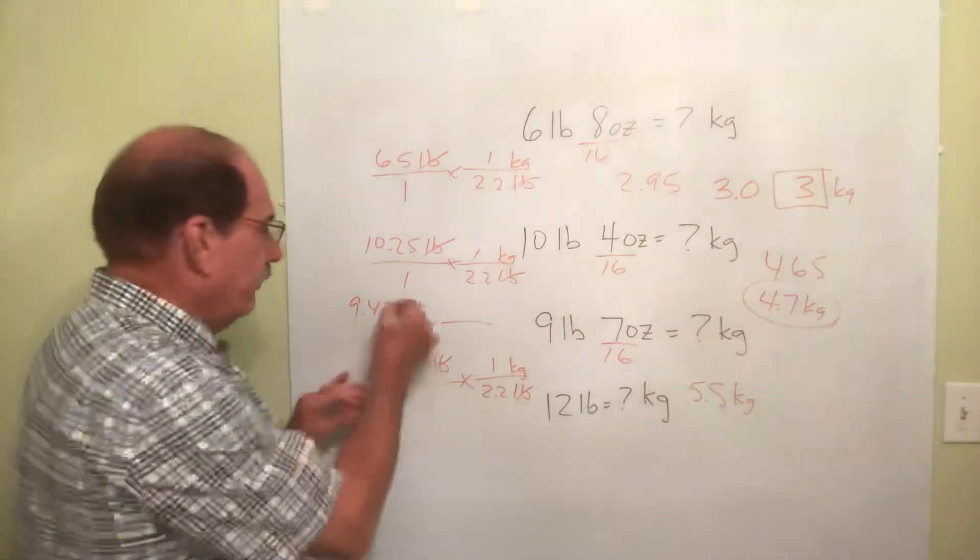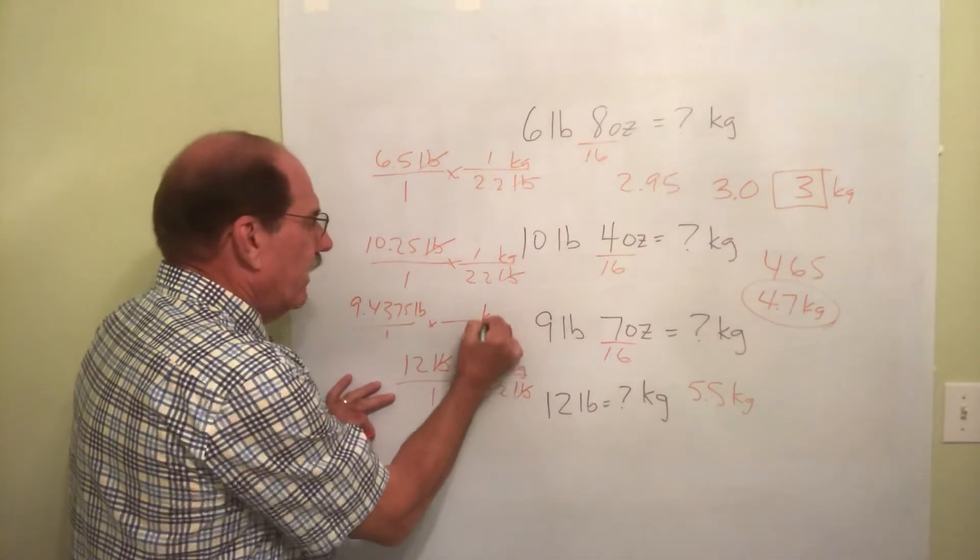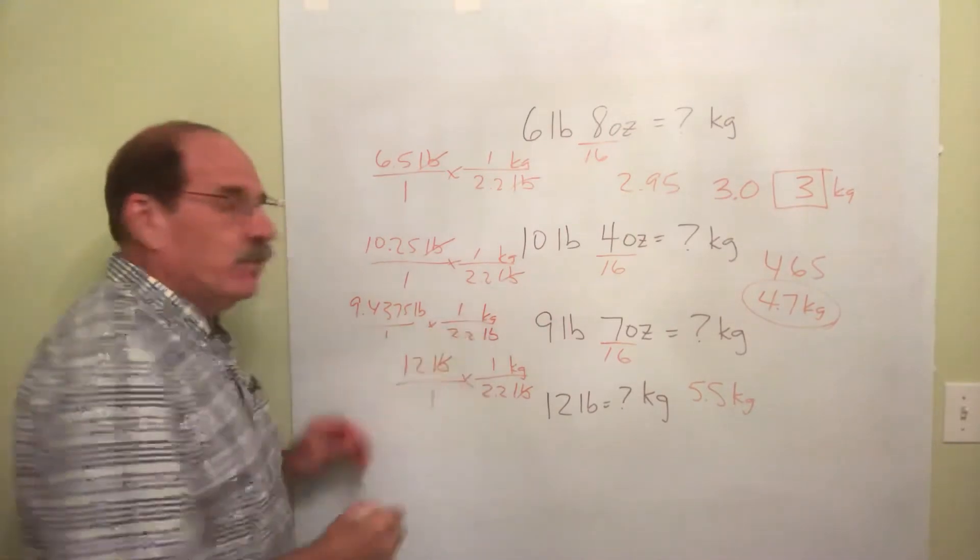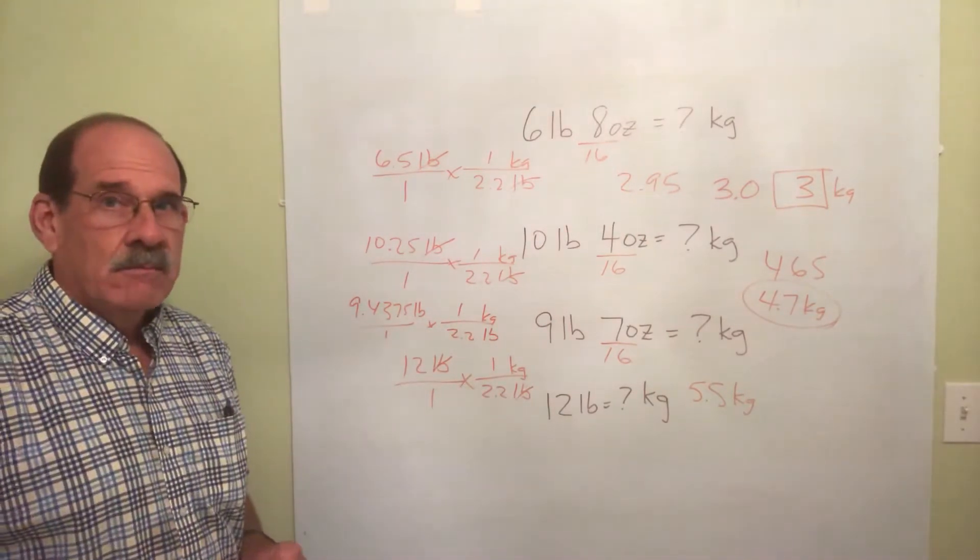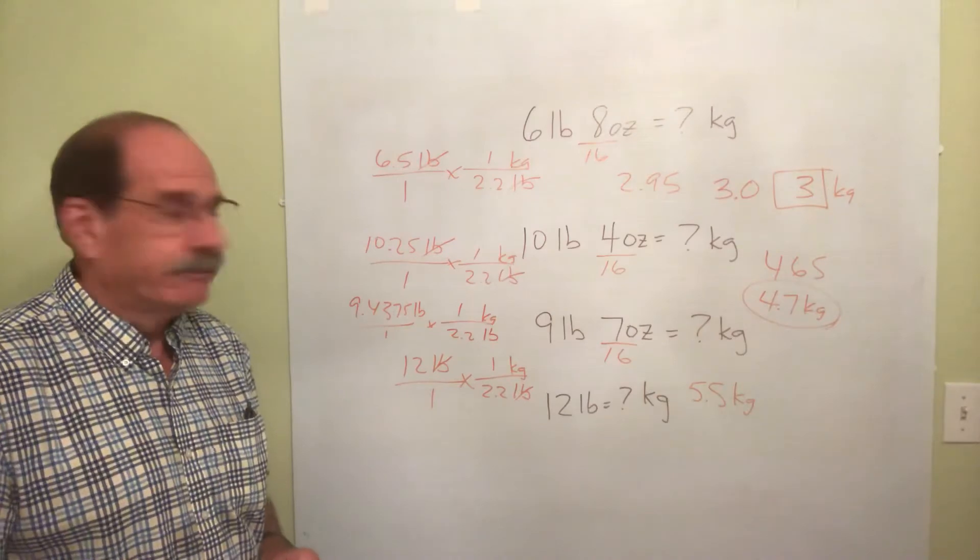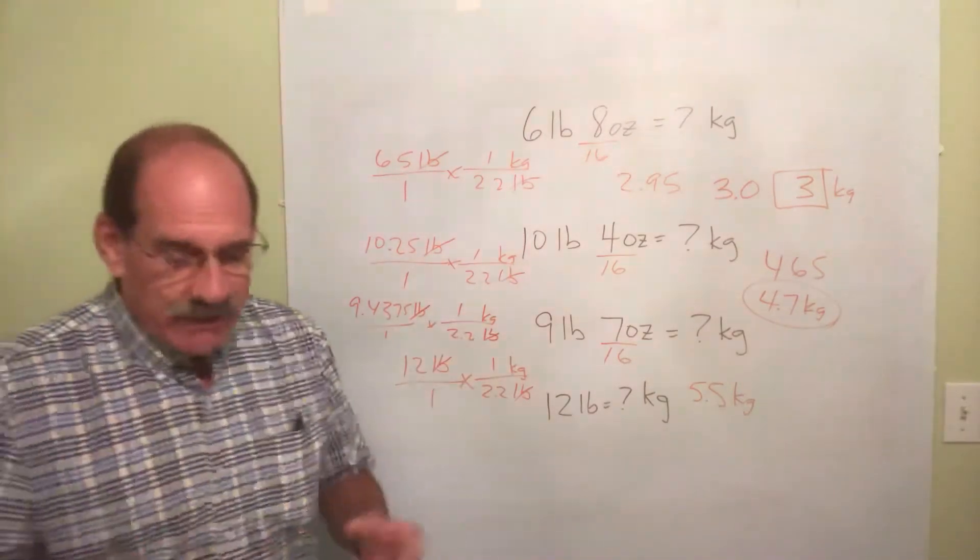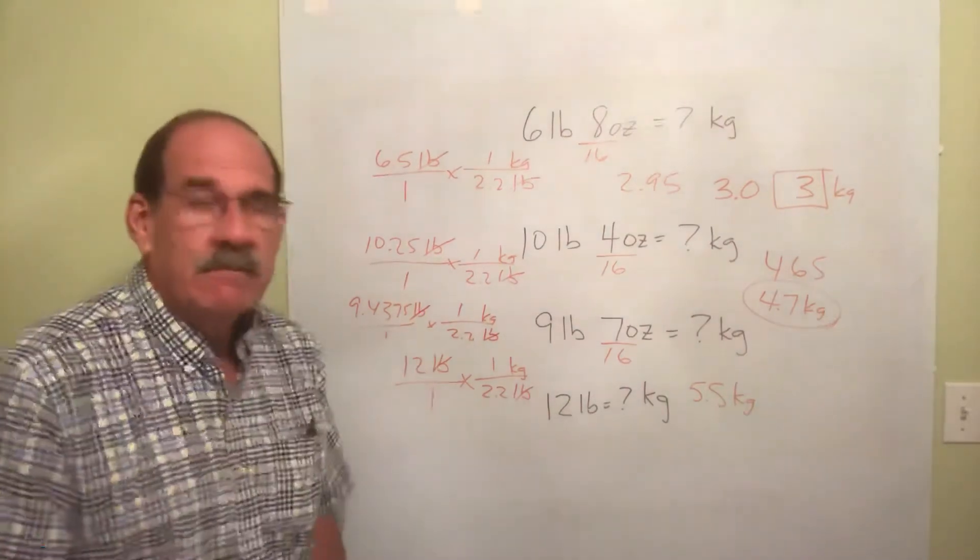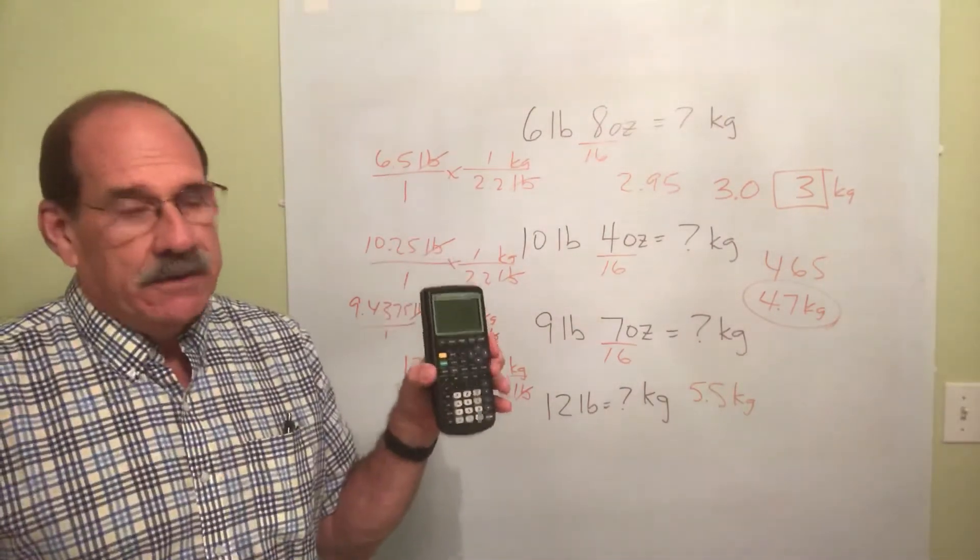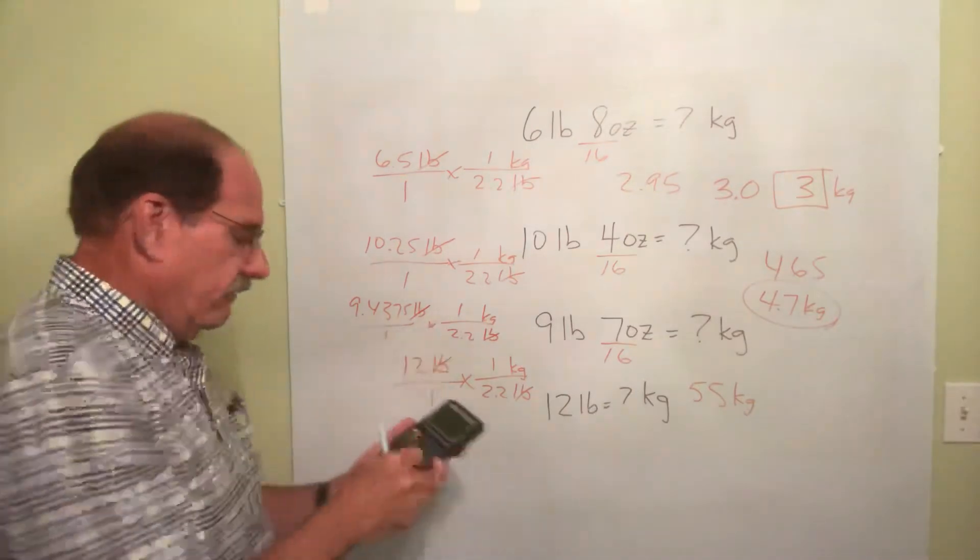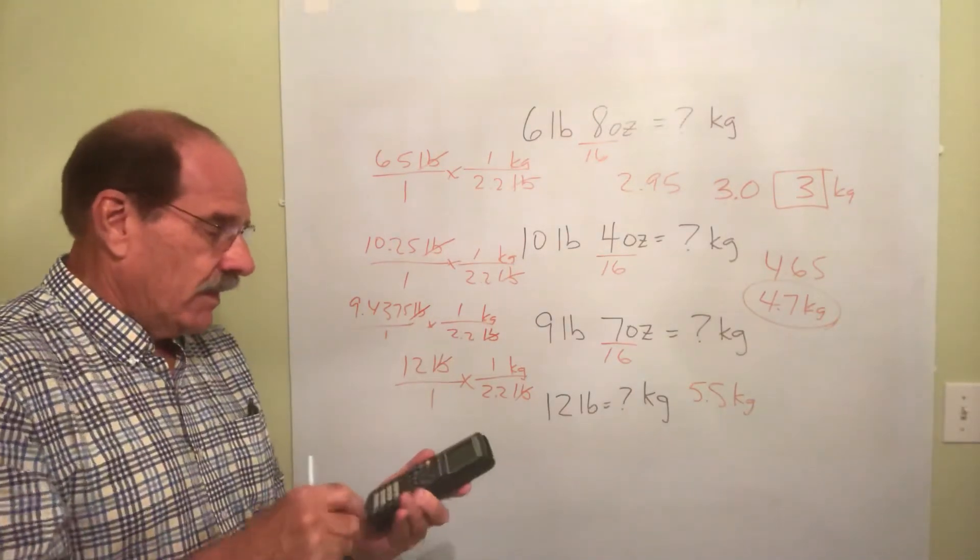Well, same old thing. I put pounds down here. I put kilograms here. 2.2 pounds is one kilogram. Am I going too fast? Cancel out pounds. And again, what am I now doing? I'm taking this number that's in my calculator. Still there. Well, it says 9.4375. And now say divide it by 2.2.